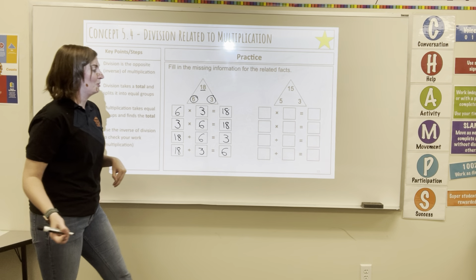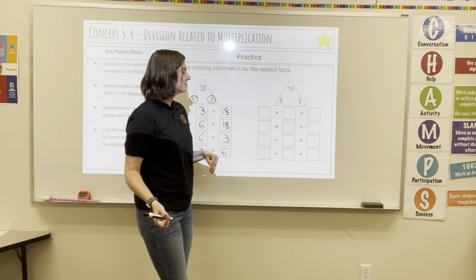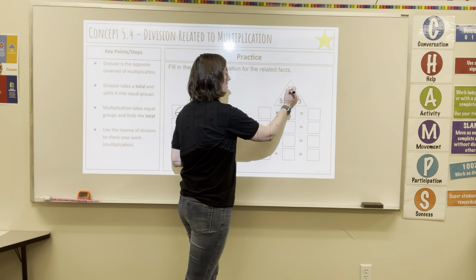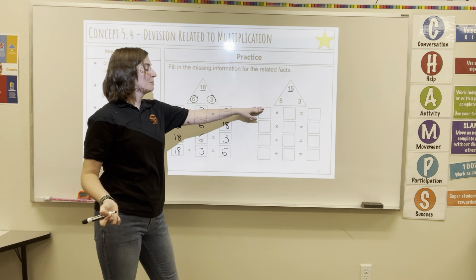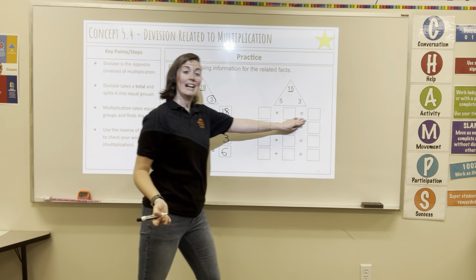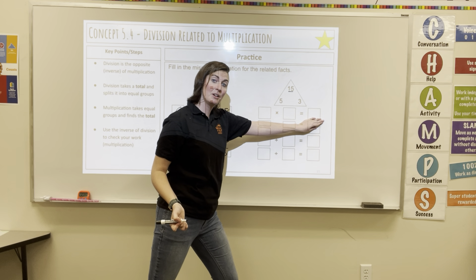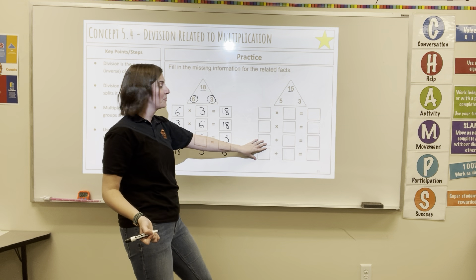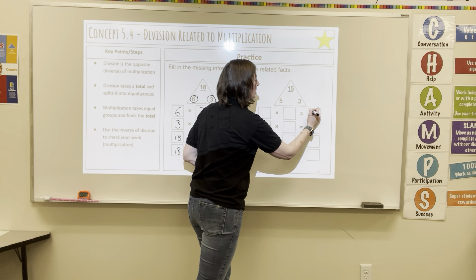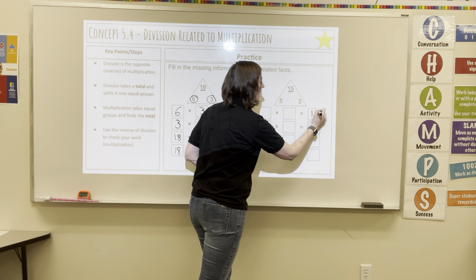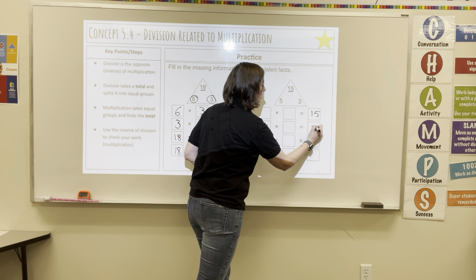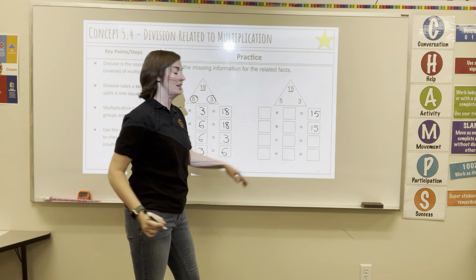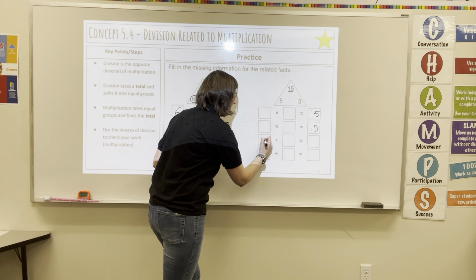Let's look at another one. 15 is my big number, and I know that multiplication gets to the big number and division starts with the total. So let's write our total for multiplication as the answer and our total in division as our dividend.